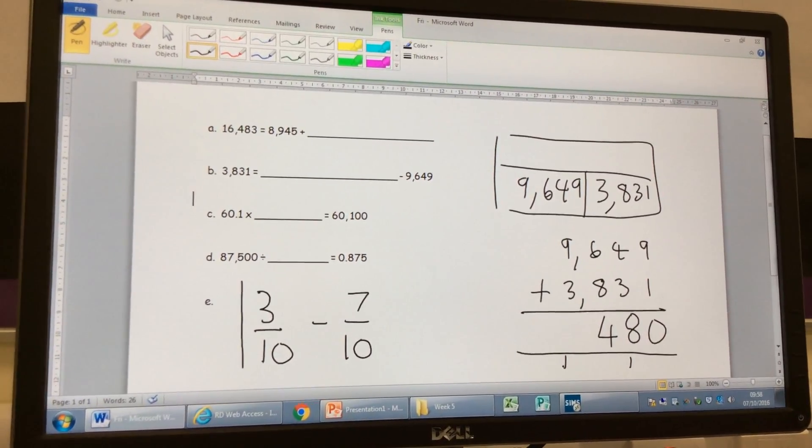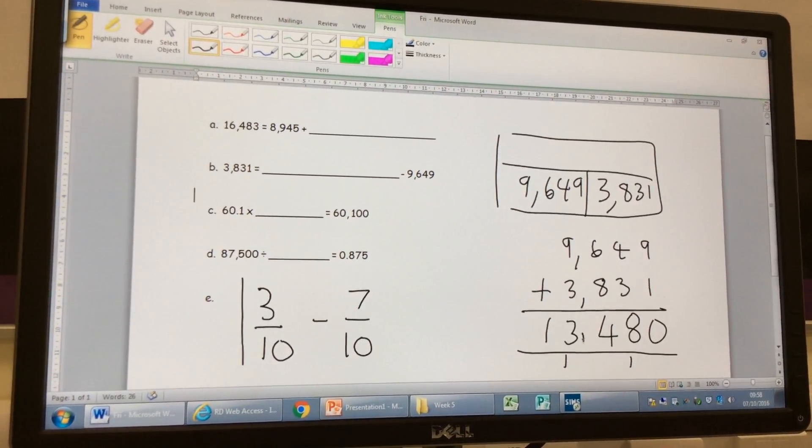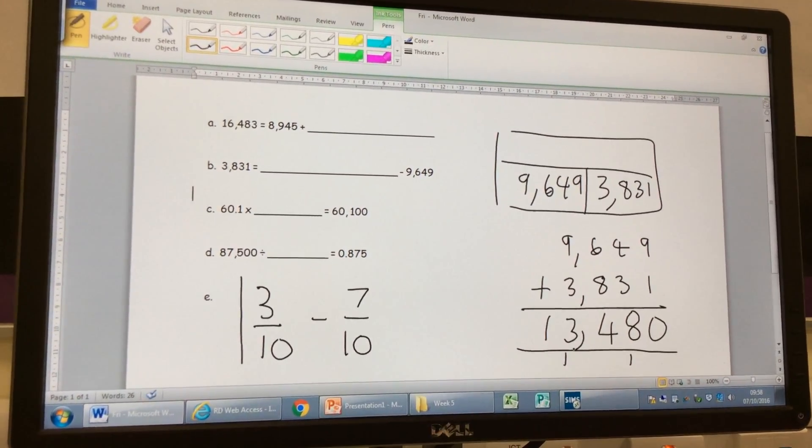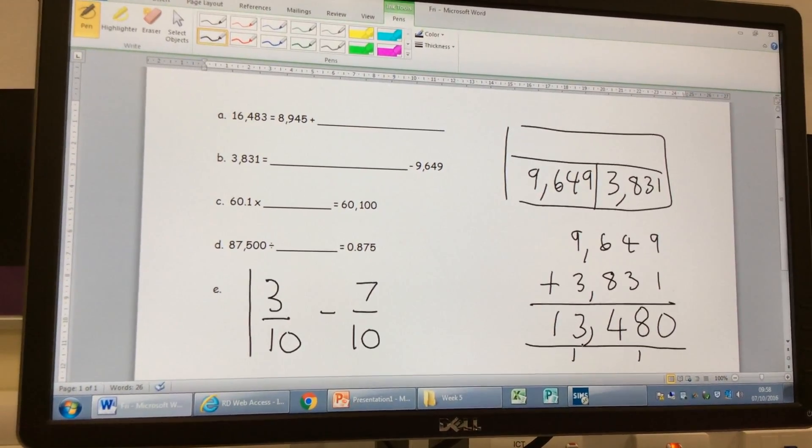12,000. And then, anything else? Got to have the 1,000 on here, so we've got 13,000. 13,480 was the answer there. Hands up if you've got that right. Brilliant. Right, well done.